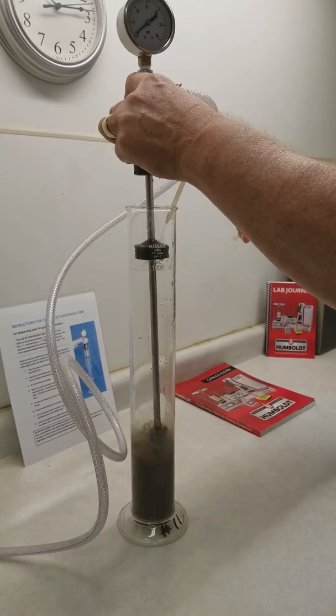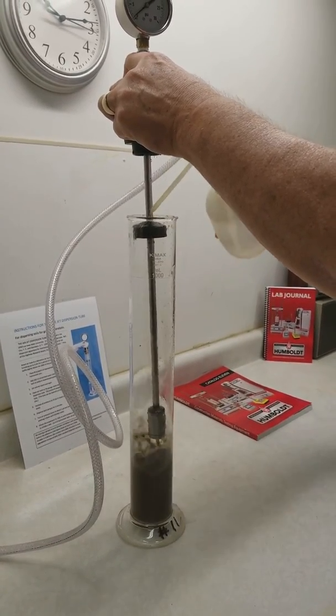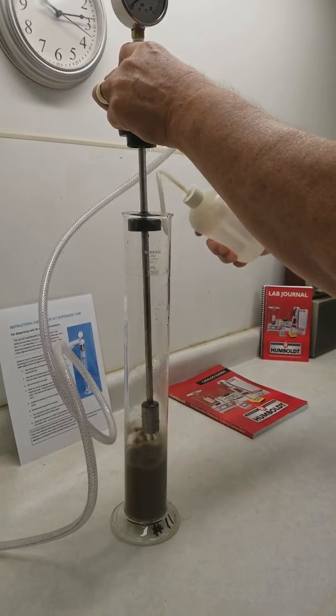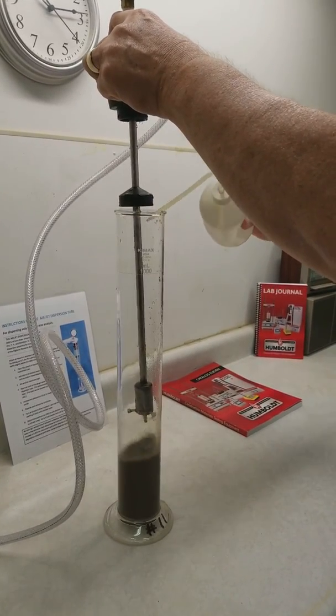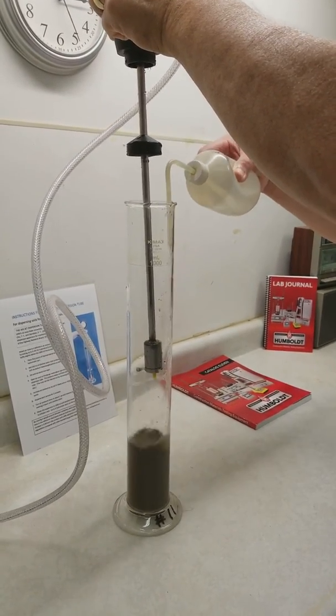The extra water that we're using to wash the soil off the dispersion device is not of any consequence because you're going to fill the jar to a thousand milliliters when you get ready to perform the hydrometer test.